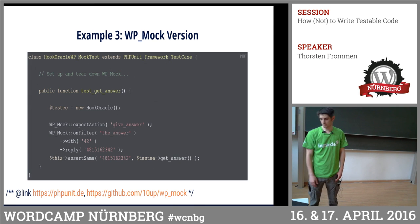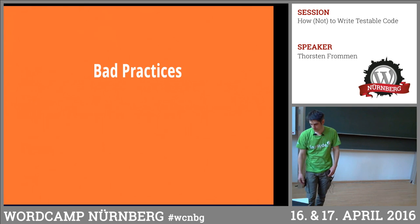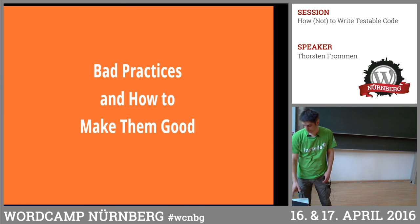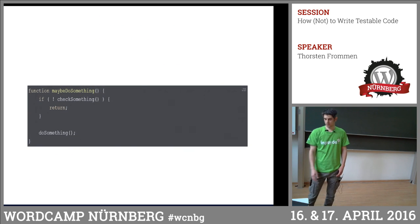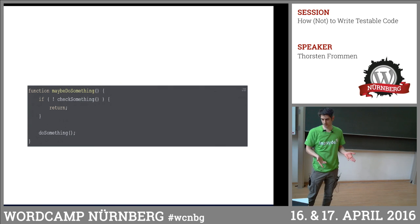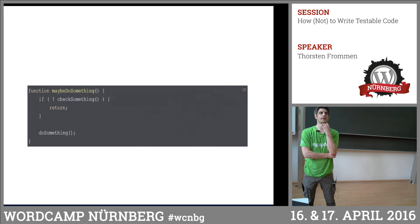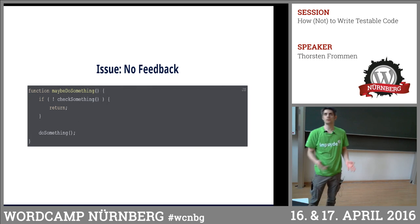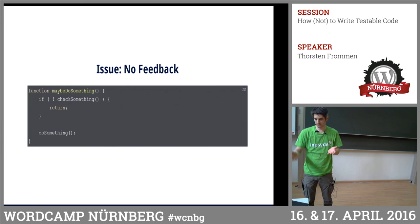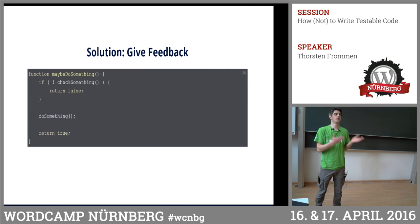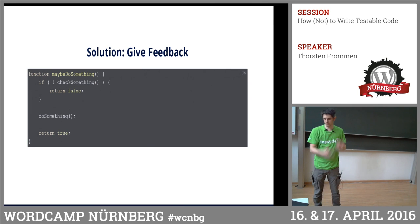Now let's come to bad practices — but showing bad practices alone is not so good, so I'm also showing how to make them good. What's the problem with that function if I want to test it? There's no feedback given. I call that function and I don't know if 'check something' is returning true or false, or if 'do something' was called or not. The solution is: just give feedback.